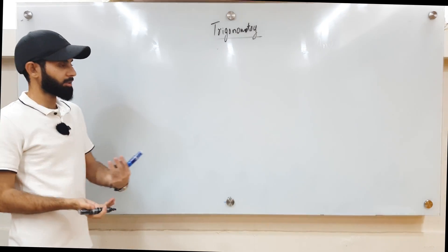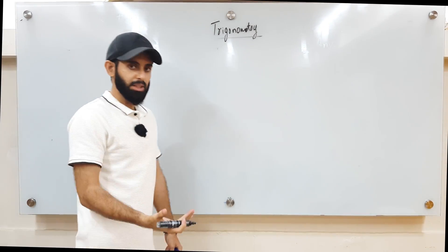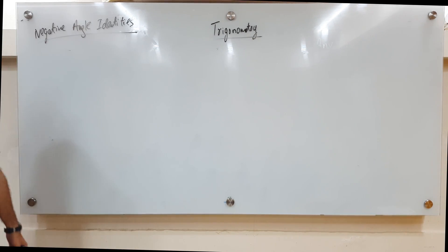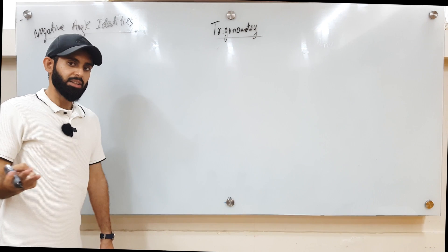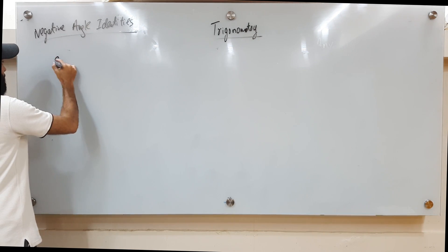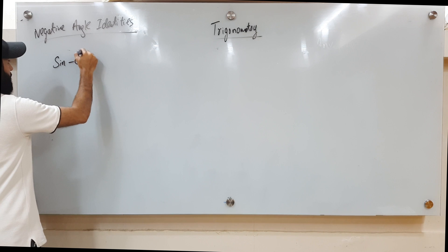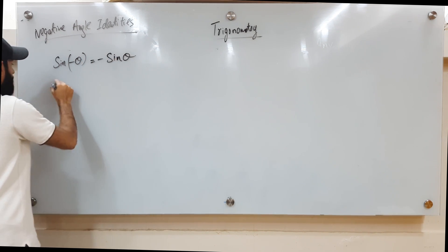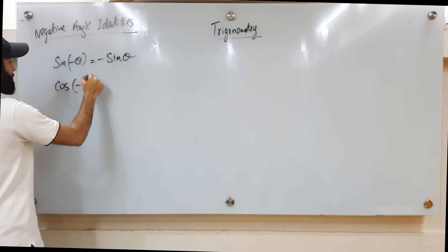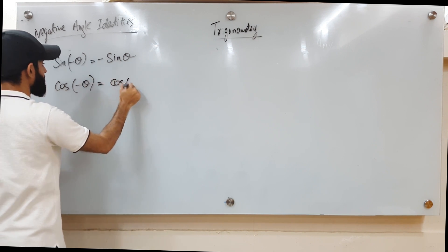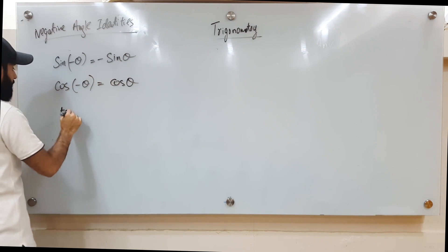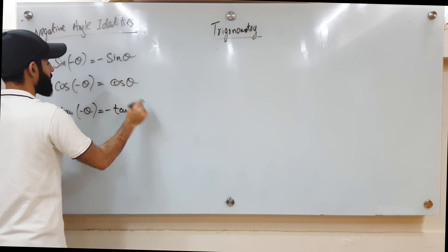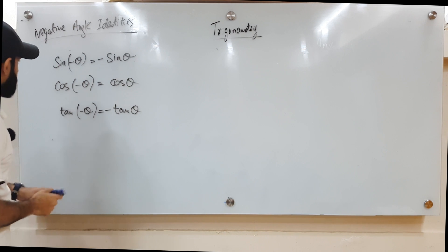Now it's important to talk about another set of identities called negative angle identities. There are three — one for each trigonometric function: sine of negative theta equals negative sine theta; cos of negative theta equals cos theta; tan of negative theta equals negative tan theta. We'll cement these with a couple of examples.